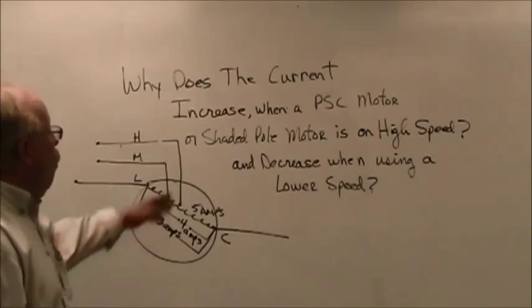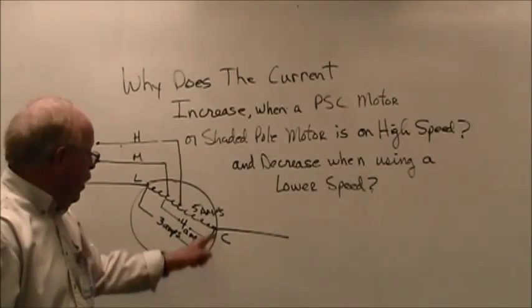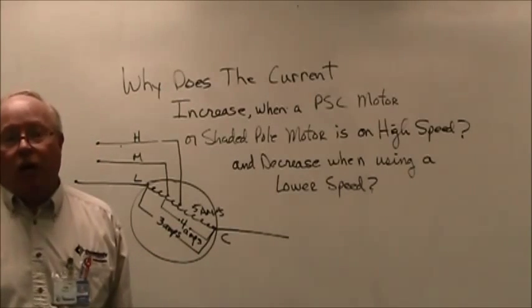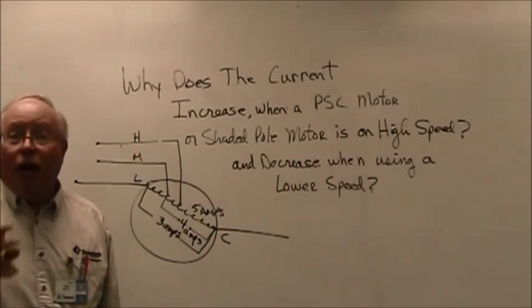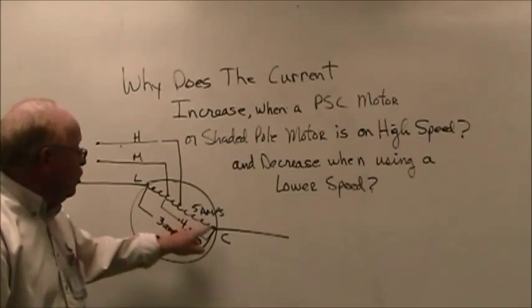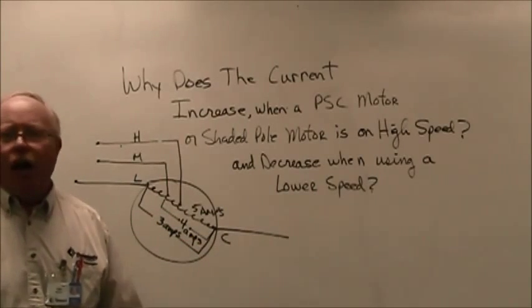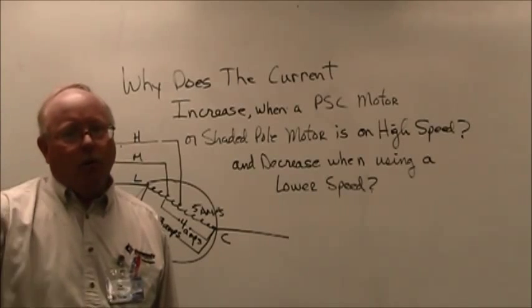So, why is the current higher on high speed? Because the resistance is lower. Why is the current lower on the lower speed? It is lower because the resistance is higher. Can't say it any simpler than that. Two Minute Tutor, out.